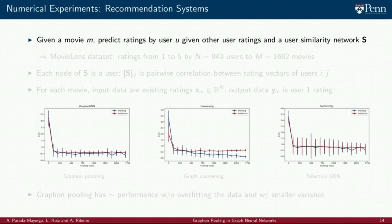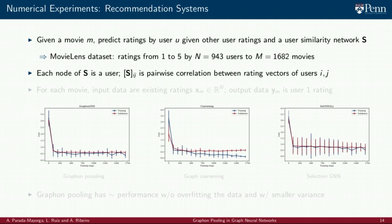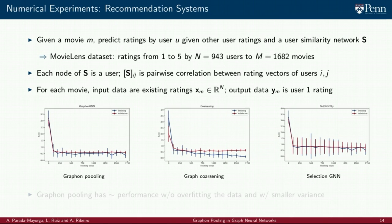Our second experiment is movie recommendation. In this problem, given a movie m, the goal is to predict the rating by user u given other user ratings to the same movie and a user similarity network. To simulate this problem, we use the MovieLens 100k dataset, which consists of 100,000 ratings between 1 and 5 given by 943 users to 1682 movies. Each node of the graph S is a user and each edge weight s sub ij is a pairwise correlation between the rating vectors of users i and j.